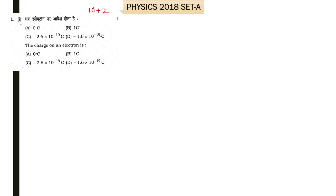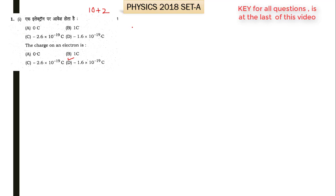Here is Set A. This is the first question, which has 12 parts. The first part asks: what is the charge on an electron? This is the simplest question — the charge on an electron is minus 1.6 × 10⁻¹⁹ coulomb. So D is the right option for the first part.